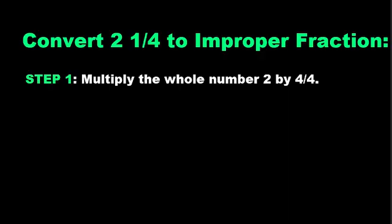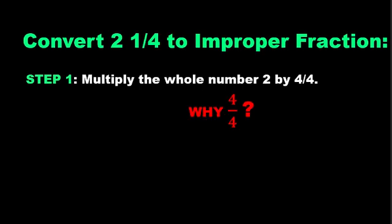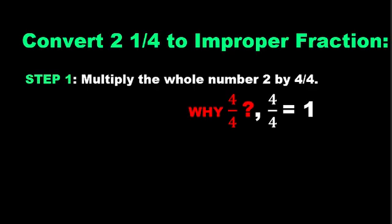Step 1: Multiply the whole number which is 2 by 4 over 4. But wait, why 4 over 4? Because the denominator of the fraction is 4, and 4 over 4 is equal to 1. Multiplying by it doesn't change the value, it just puts the whole number into fraction form. So 2 by 4 over 4 is equal to 8 over 4.